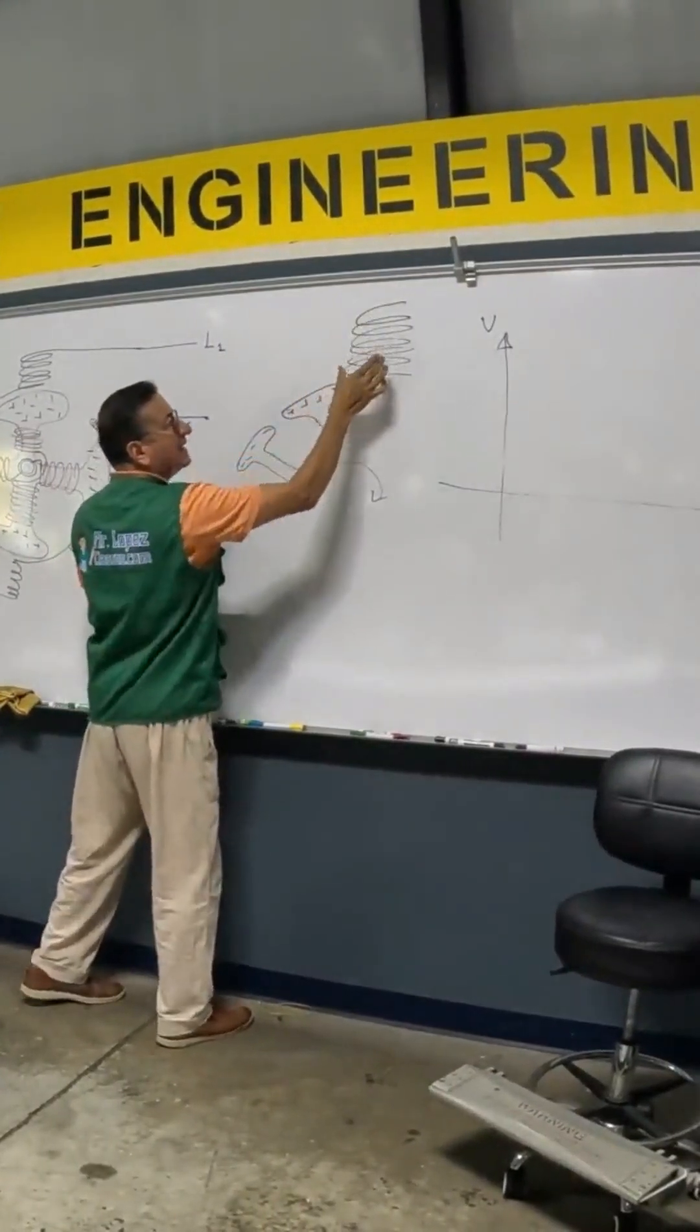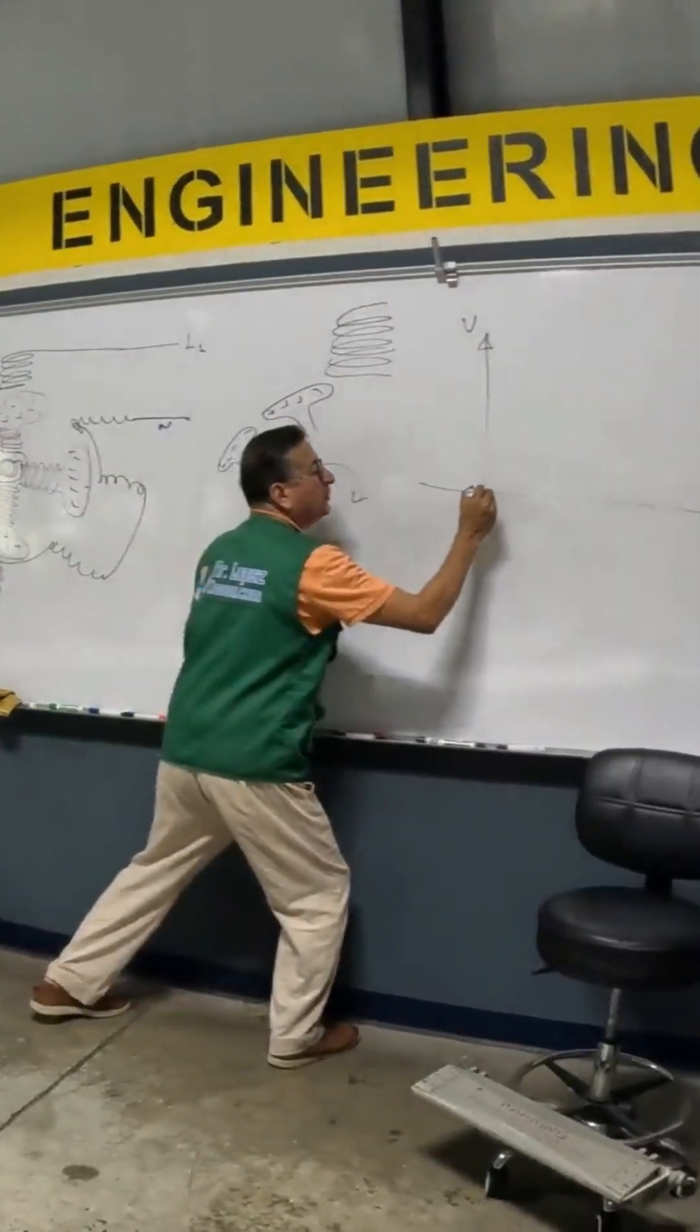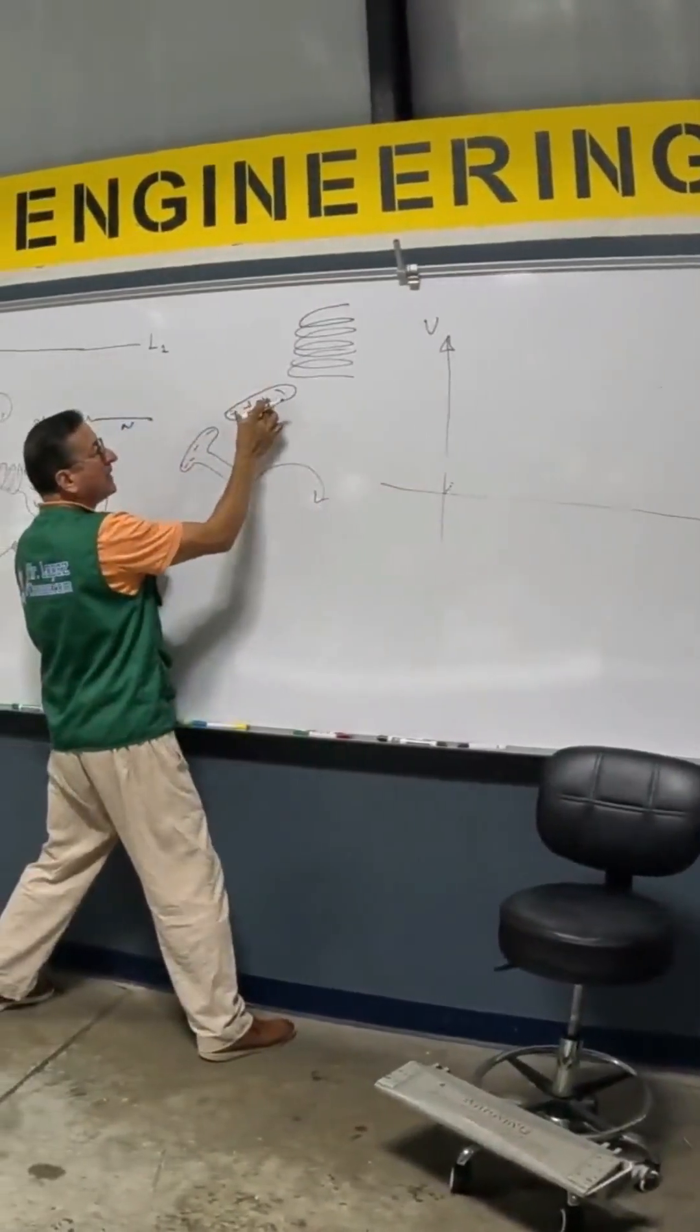is entering in front of the coil. What happens? It starts to produce positive voltage. What happens when this one